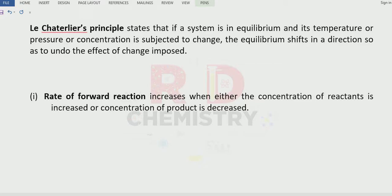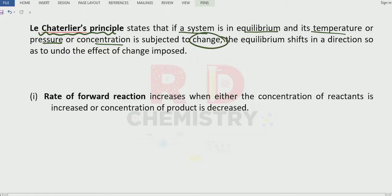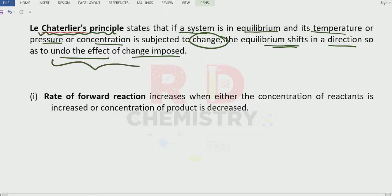Now what is Le Chatelier's principle? According to Le Chatelier's principle, if a system is at equilibrium and its temperature, pressure, or concentration is subjected to change, then equilibrium will shift in a direction so as to undo the effect of the change imposed. That means if I increase the pressure, equilibrium tries to decrease the pressure. If we increase the temperature, equilibrium tries to decrease the temperature. That is the meaning of 'undo the effect of the change imposed.'